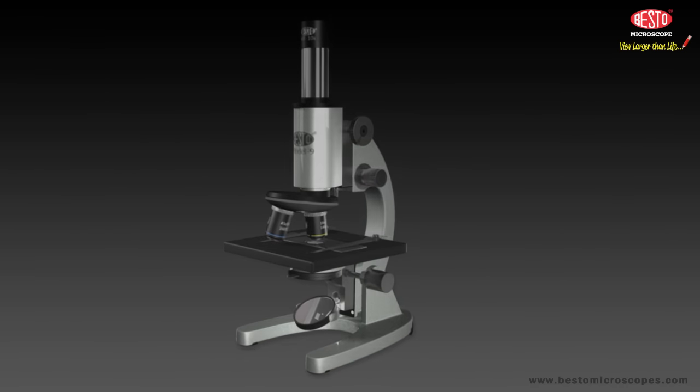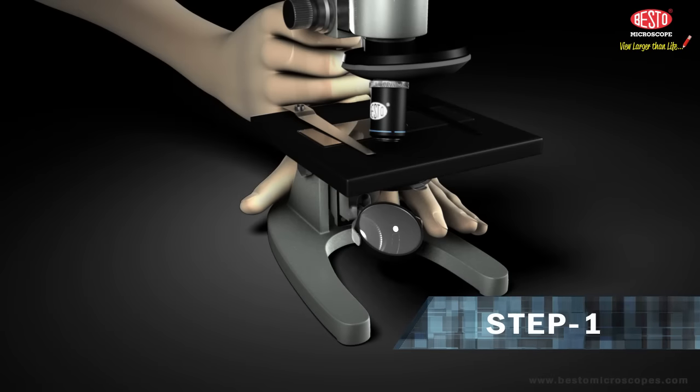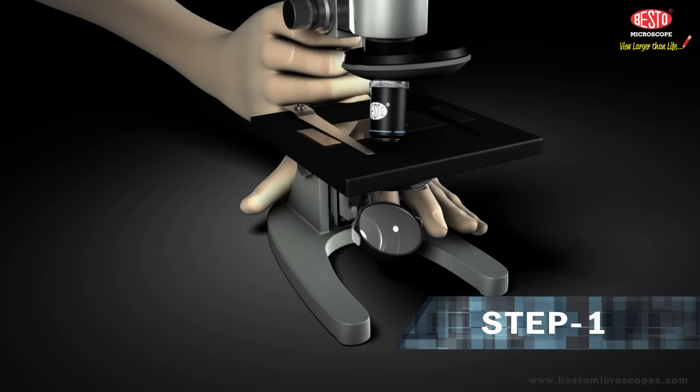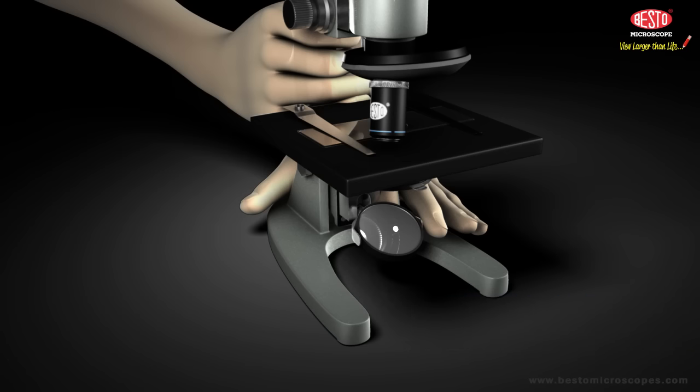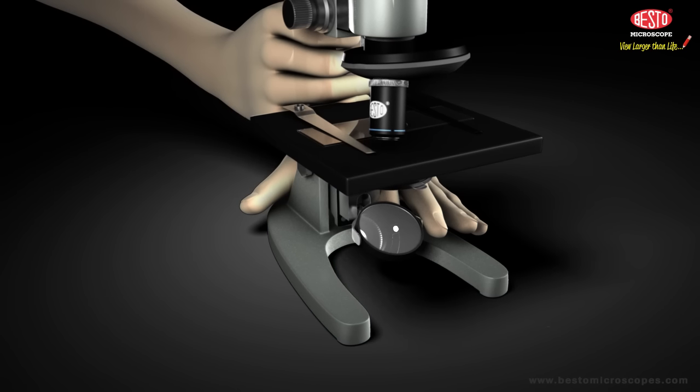As well as the microscope, Step 1: Remove the Besto microscope from its box or cover. Always pick up your microscope correctly. Grasp it firmly with two hands, one hand under the base and another on the arm.